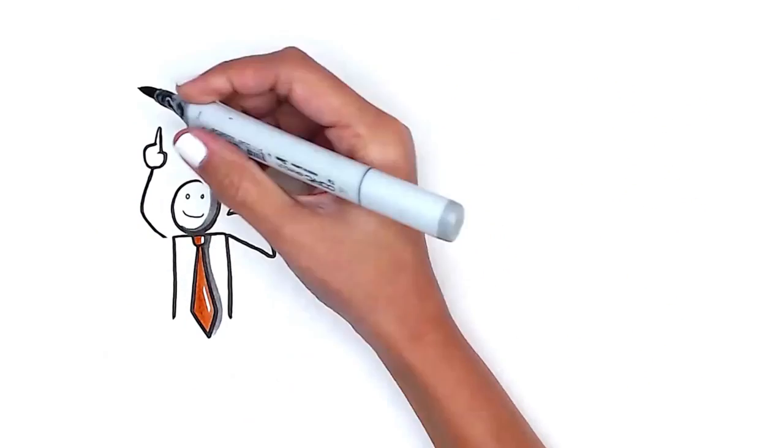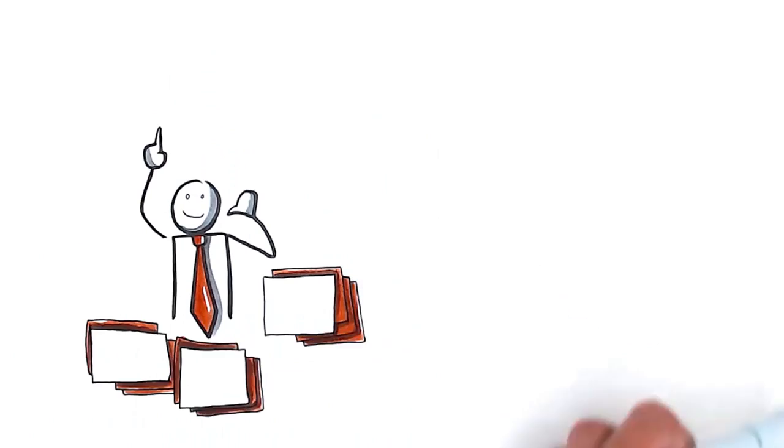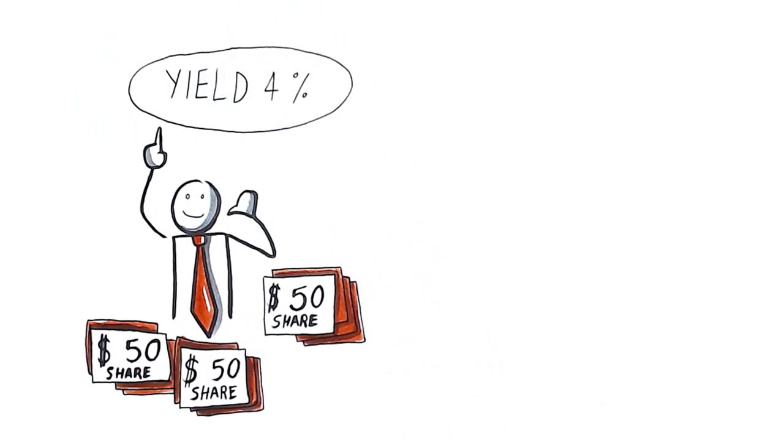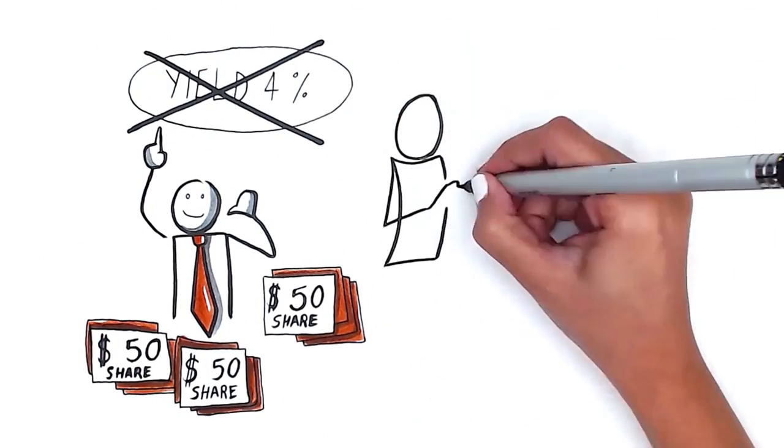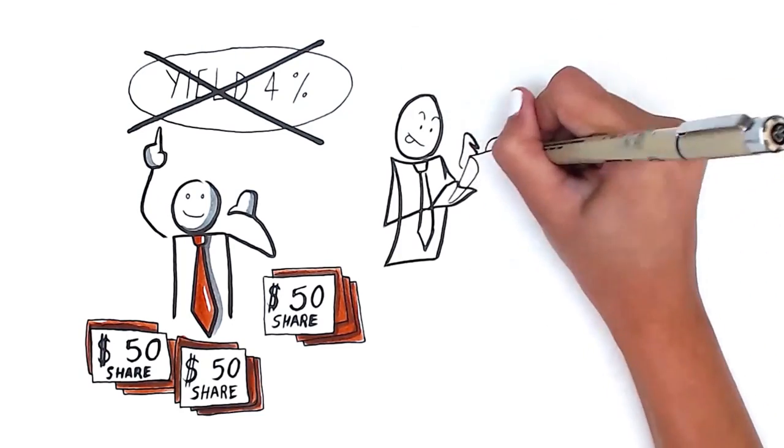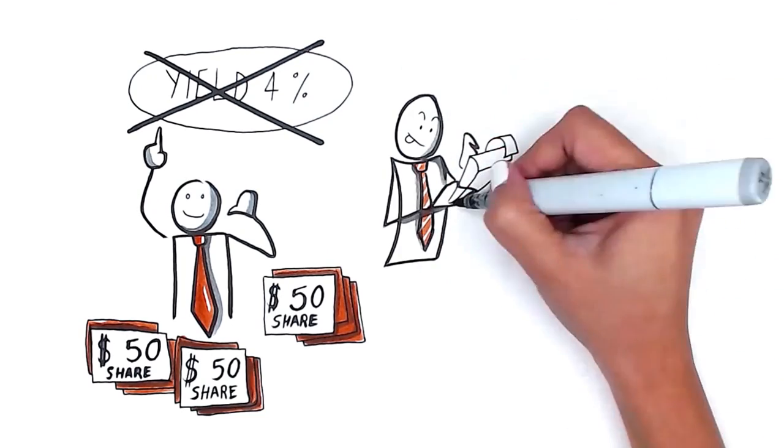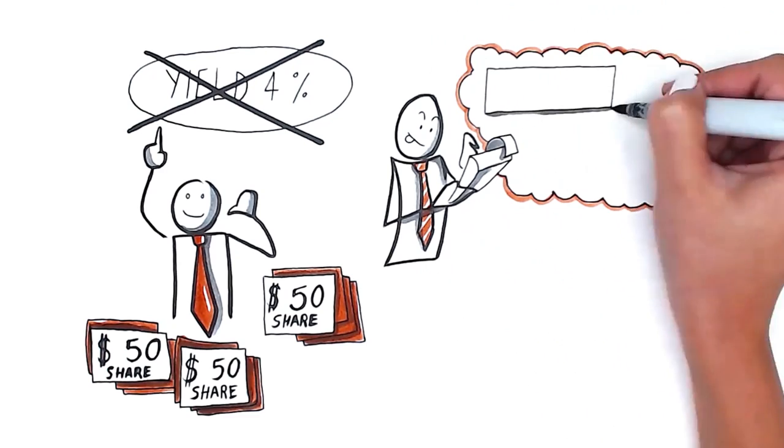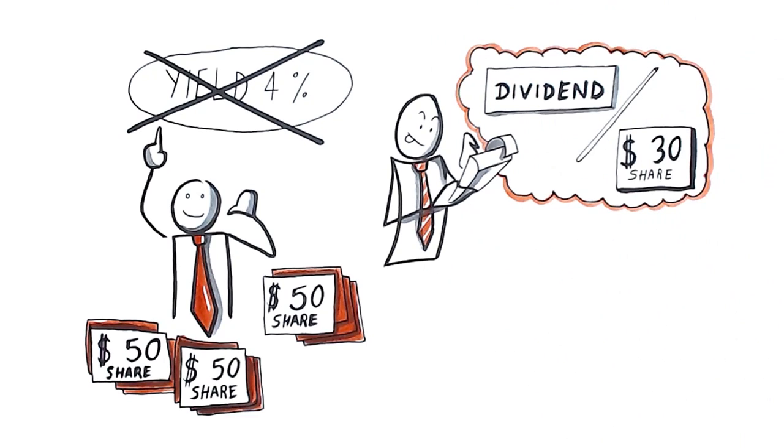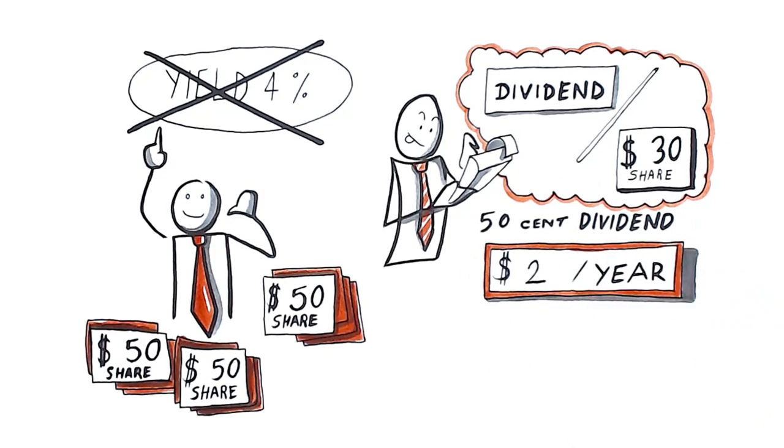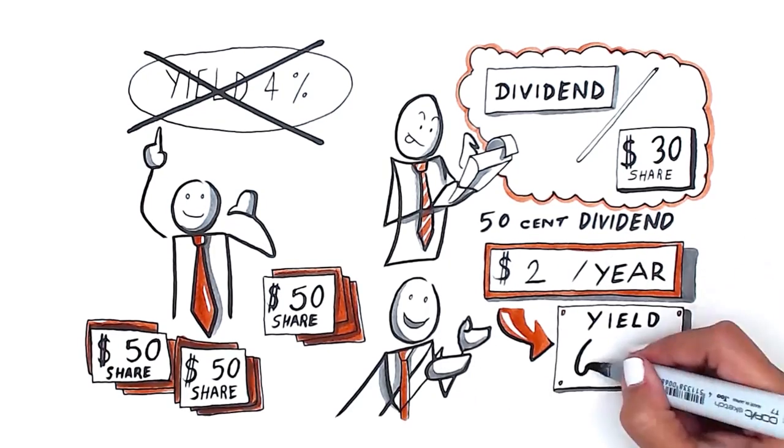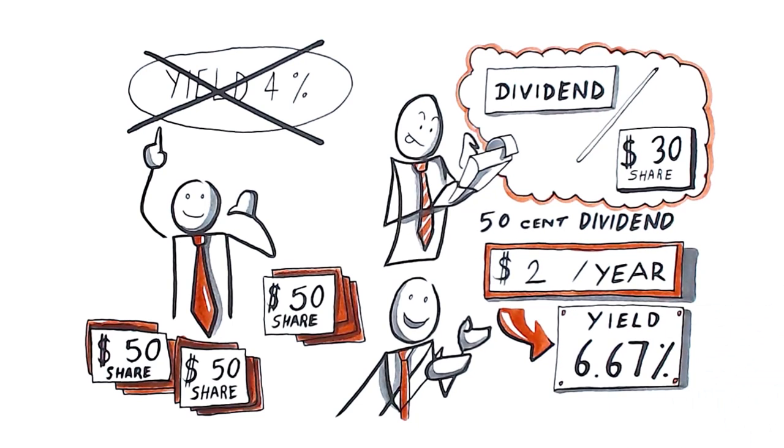The investor who buys or buys more shares at $30 does not have a yield of 4% like the investor who bought at $50. Instead, because the yield is calculated by the dividend paid per share, the $30 share paying a $0.50 dividend or $2 per year creates a yield of 6.67%.